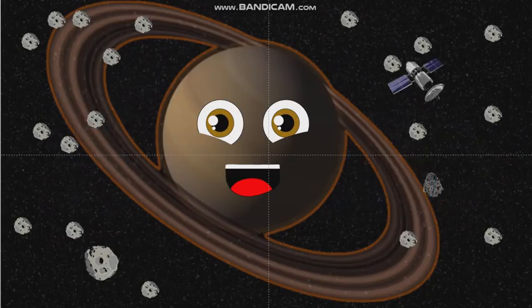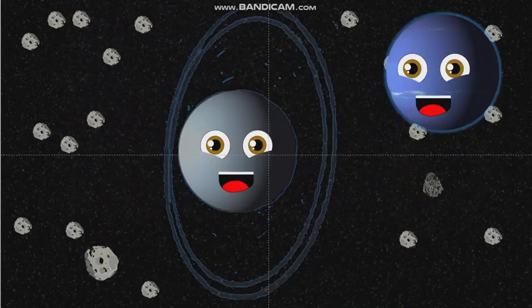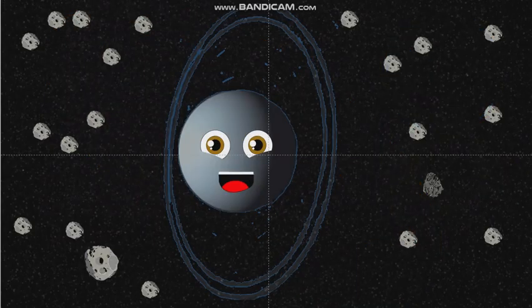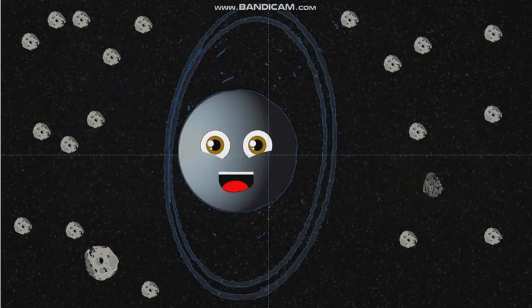My name's Uranus and I'm an ice giant. That's dope! I was the first planet found with a telescope. I rotate backwards and on my side. I smell like rotten eggs but that's just the hydrogen sulfide.